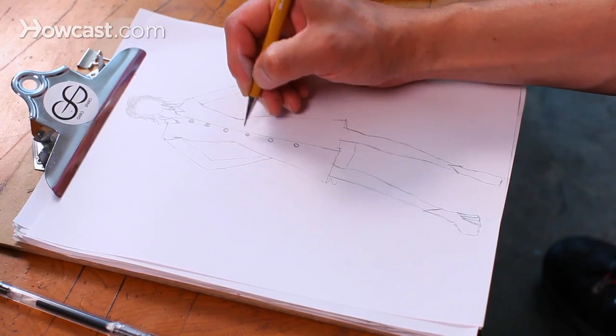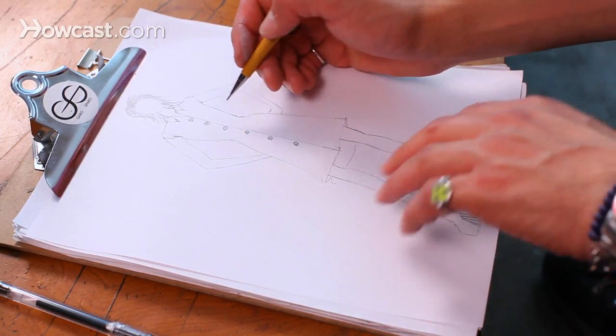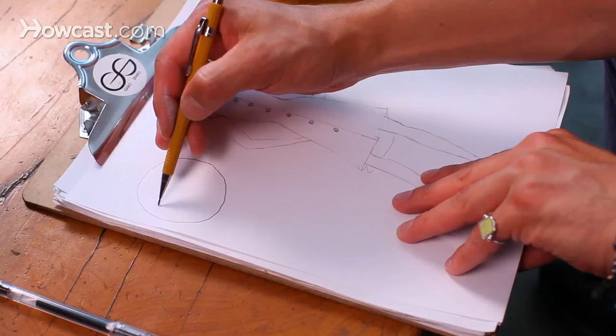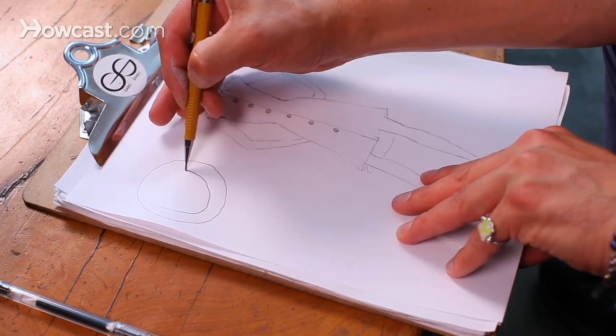And you can do little crosses in them to really represent the fact that they are buttons, how they're sewn on. You could also go right beside the page and do a larger version of the style of button that you are rendering.